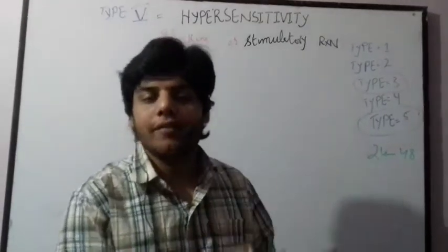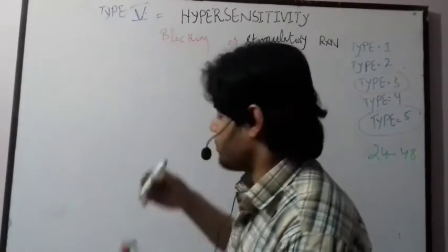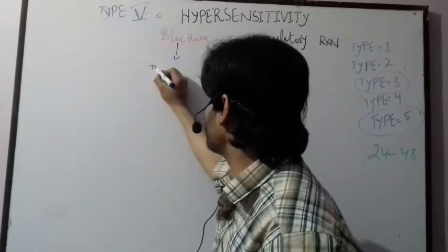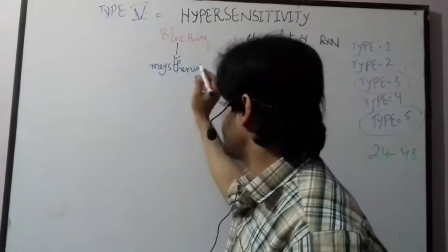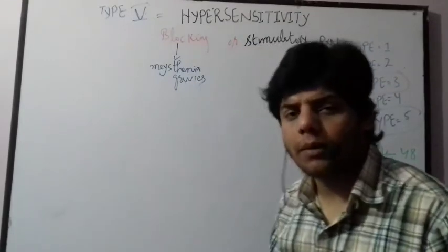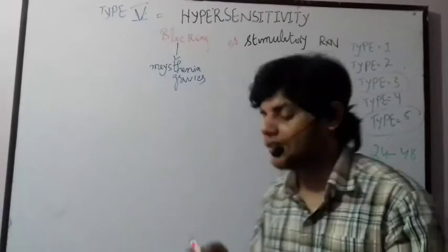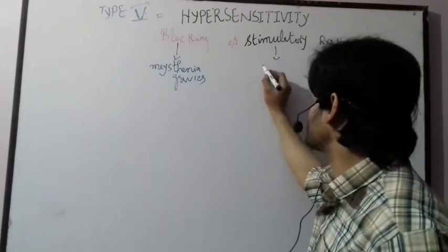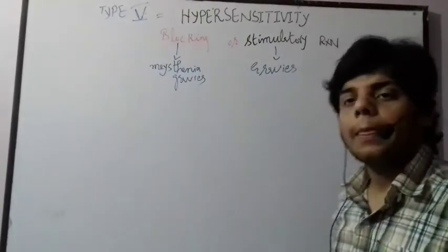Type 5 hypersensitivity can cause two diseases: Graves' disease and Myasthenia gravis. Myasthenia gravis is related to the blocking reaction — in Myasthenia gravis, the blocking reaction occurs. Graves' disease is related to the stimulatory reaction, and that is why Type 5 is also called the stimulatory reaction.